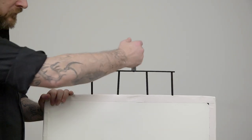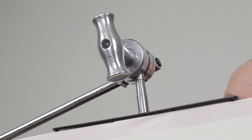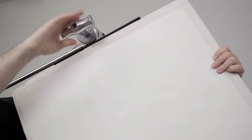Hello and welcome to this short video on the Kupo Foam Core Fork with baby 5 1⁄8 inch stud. The Foam Core Fork is used to connect Foam Core to any baby receiver, most commonly mounted in a grip arm.